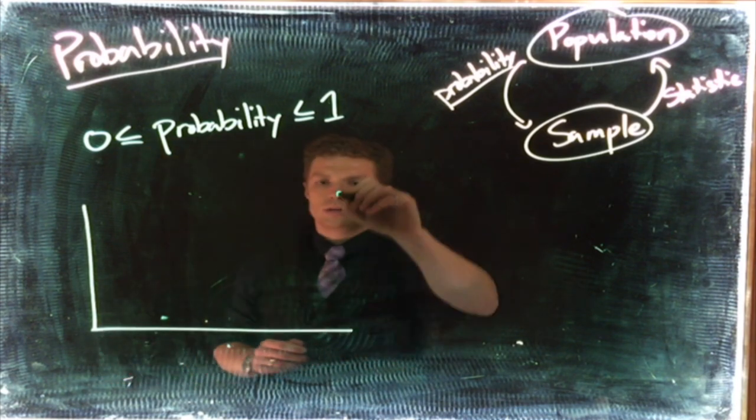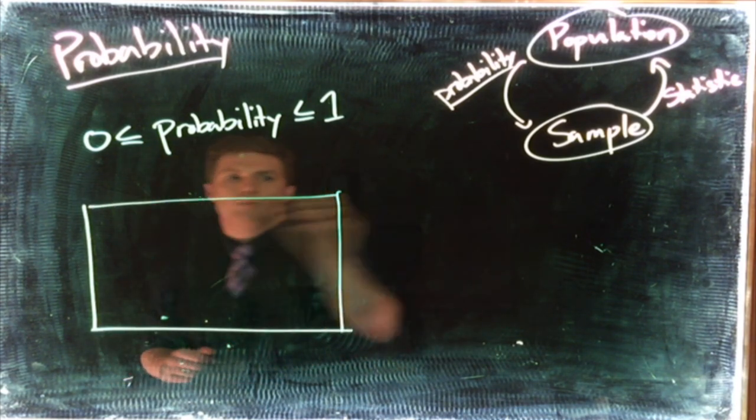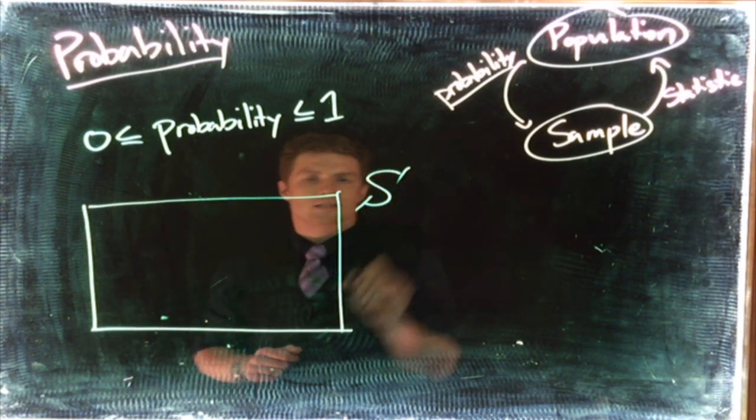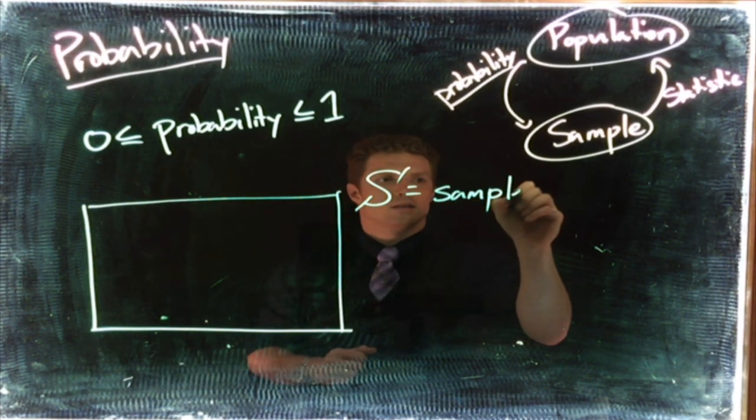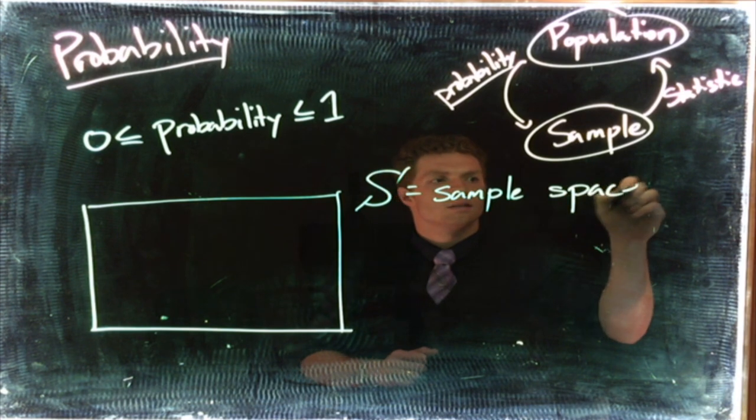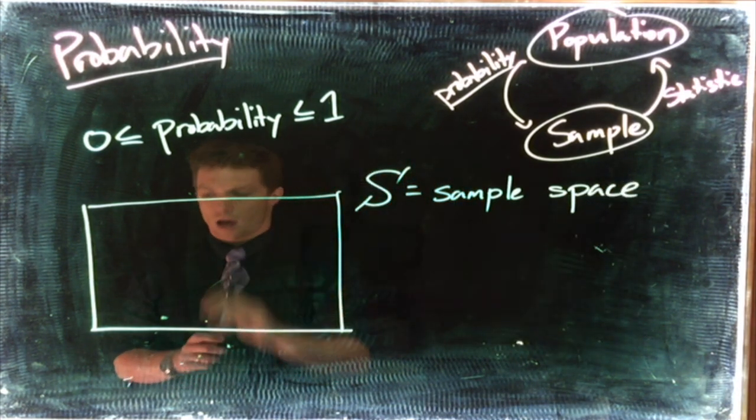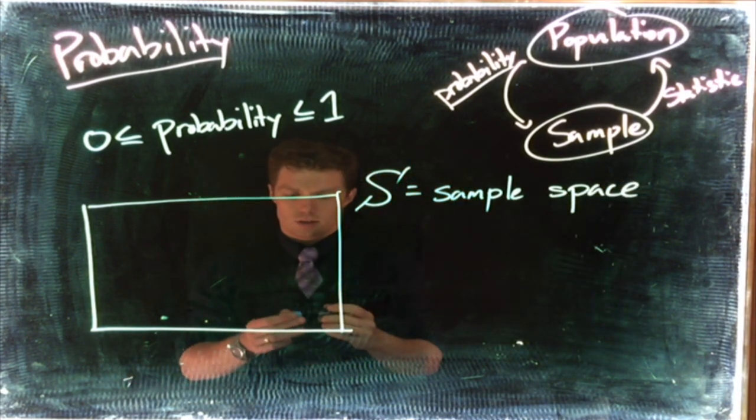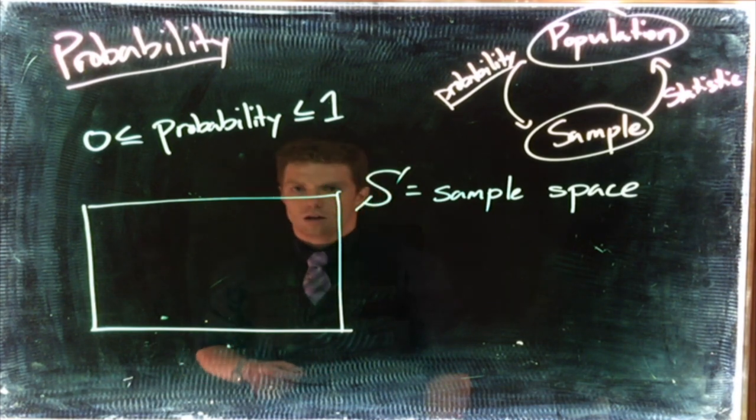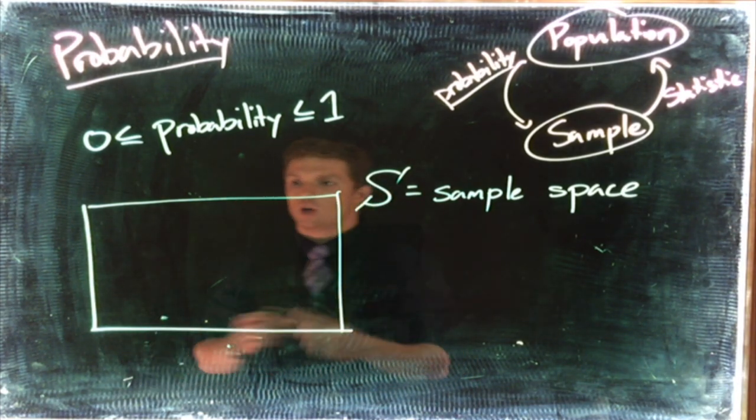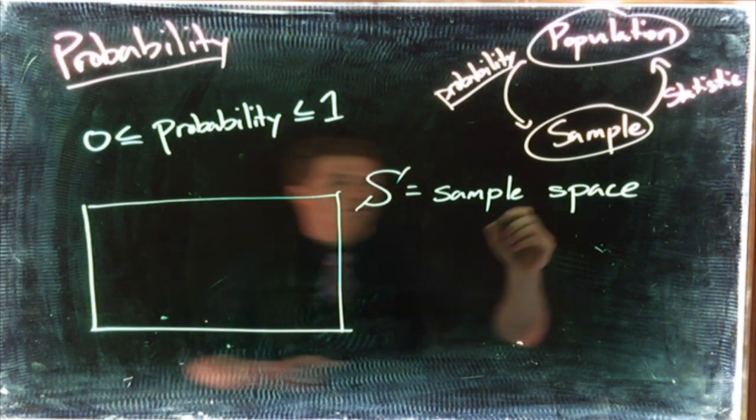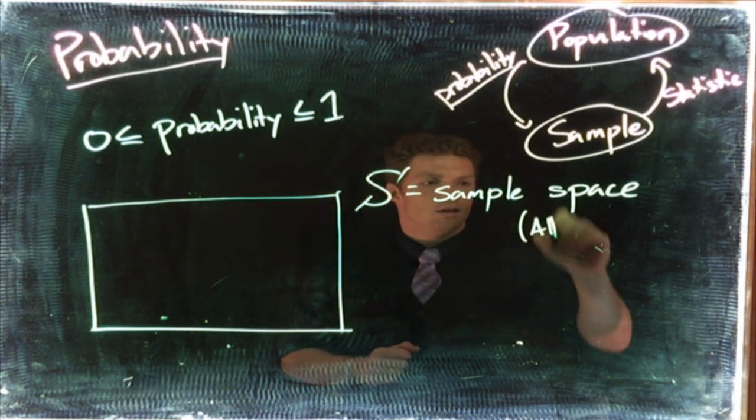We need to define what's known as our sample space. I'll write that as this capitalized S. This is our sample space, and this is all possible outcomes of whatever we're interested in—rolling a dice, flipping a coin. The sample space is all possible outcomes.